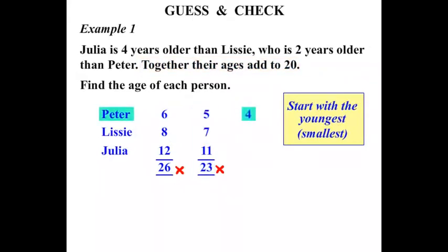So let's say Peter was 4. Lissy, 2 years older, would be 6. And Julia, 4 years older than Lissy, would be 10.